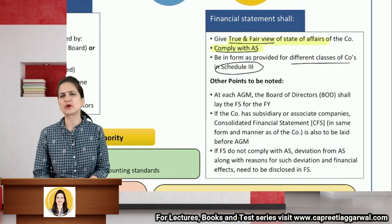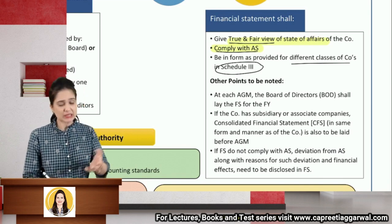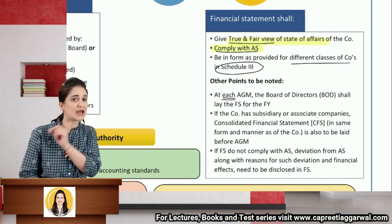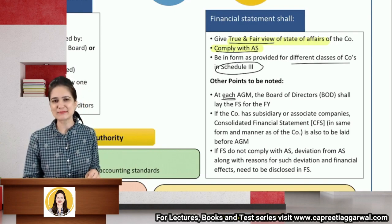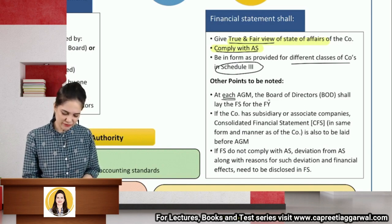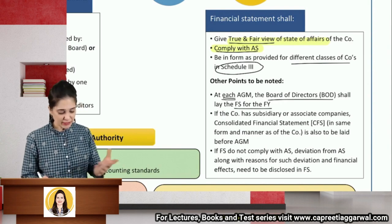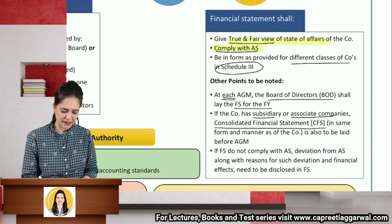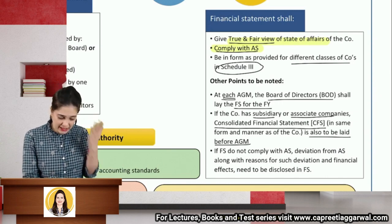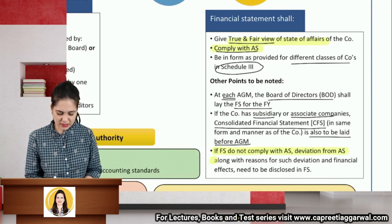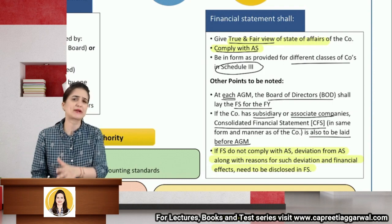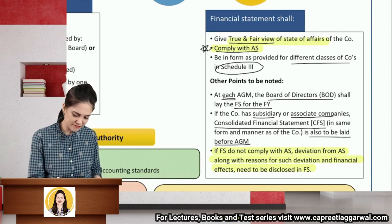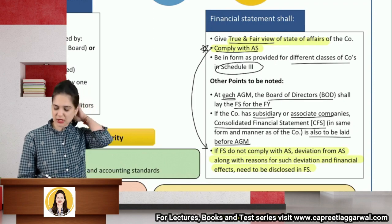At each Annual General Meeting, consideration of financial statements is ordinary business. The board of directors shall lay financial statements for the financial year. If the company has subsidiaries or associates, consolidated financial statements shall also be laid before the AGM. In case the financial statements do not comply with accounting standards, the deviation along with reasons and the financial impact of the deviation shall be disclosed in the financial statements.